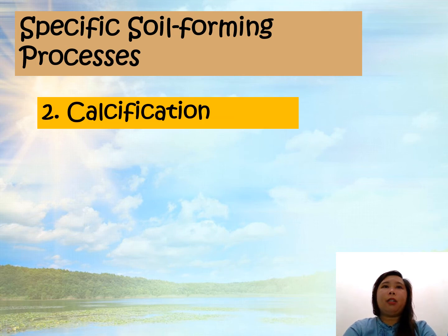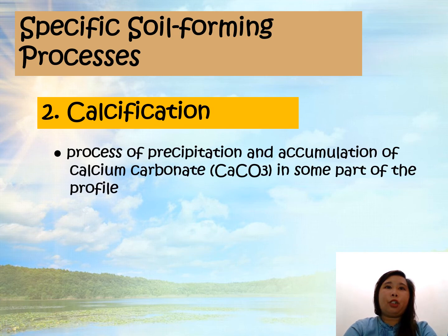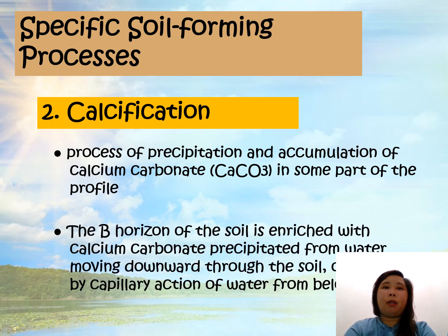Another process is calcification, which is the process of precipitation and accumulation of calcium carbonate in some part of the profile. The B horizon of the soil, which is the soil layer usually below the topsoil, is enriched with calcium carbonate.